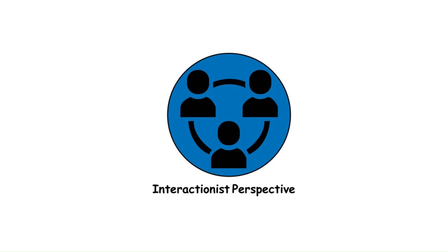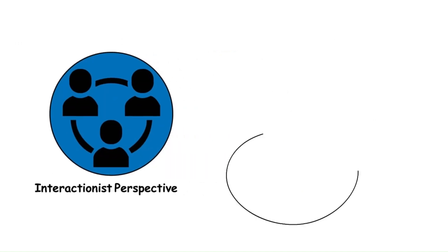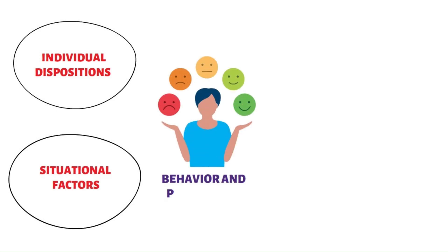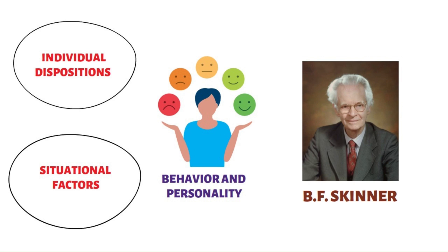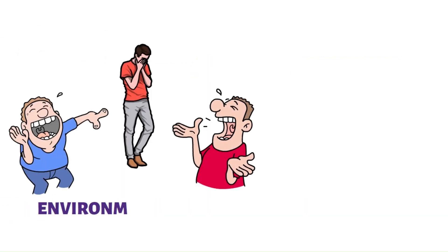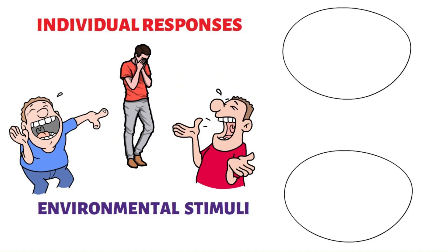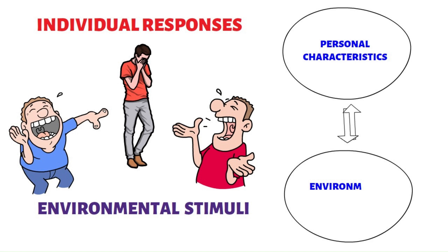The Interactionist Perspective integrates individual dispositions and situational factors in explaining behavior and personality. B.F. Skinner proposed that behavior results from the interaction between environmental stimuli and individual responses, highlighting the bidirectional influence of personal characteristics and environmental contexts on behavior.